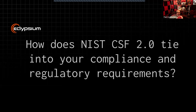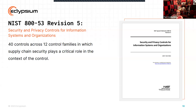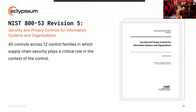How does NIST CSF tie into other compliance and regulatory standards? Everyone's favorite, NIST SP 800-53, certainly comes into play and provides even more controls and details that support the NIST CSF. They have a relationship between them. 800-53 has 40 controls across 12 families, and supply chain security plays a critical role inside of this compliance standard as well. If you're looking at 800-53, understand that supply chain security is part of it.